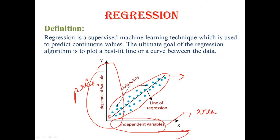We are trying to plot a line to reduce the gap between the data points and the line, so that all data points fall on this line and we can directly get the value of price based on the particular area. Regression is a technique which helps in finding the correlation between variables — what is the exact relation between them, how they are dependent on each other — and enables us to predict the continuous output variable based on one or more predictor variables. The regression shows a line or a curve that passes through all the data points of the graph.